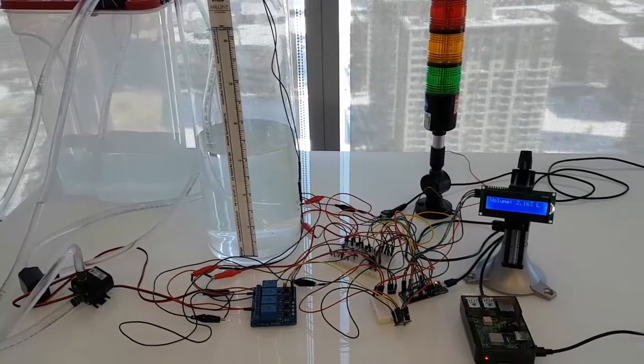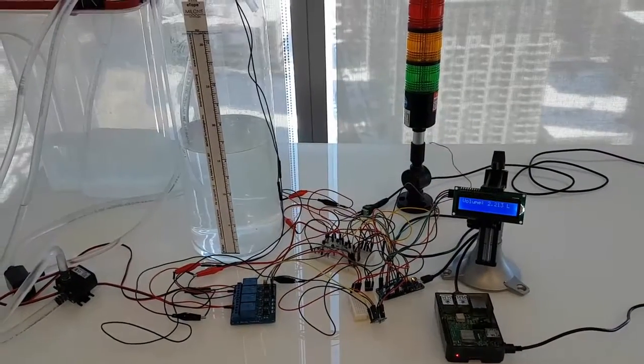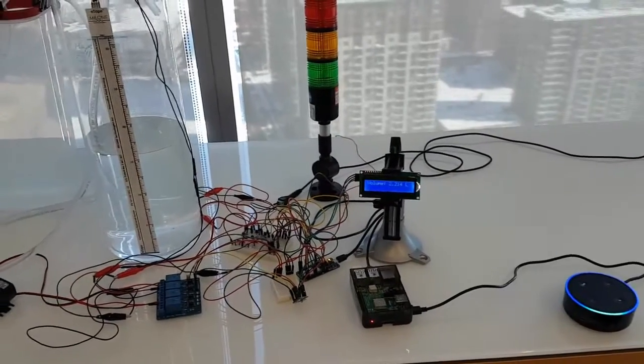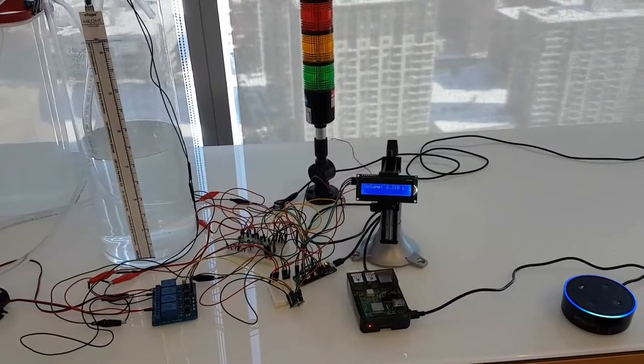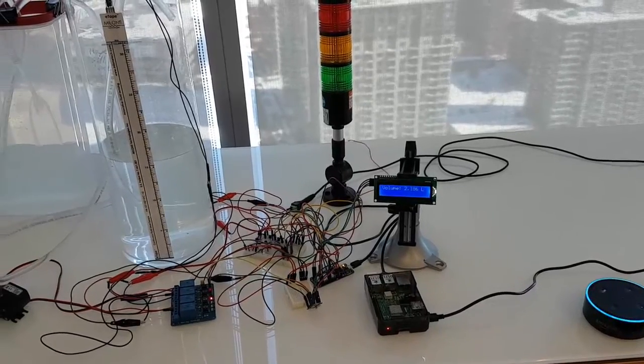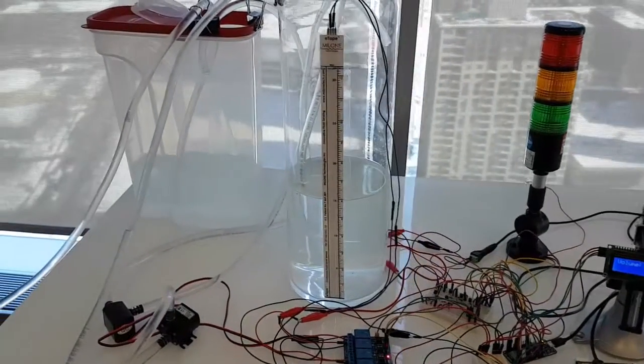Similarly, we can remove liquid by going, Alexa, tell RioControl remove 500. Pumping 500 milliliters of liquid out of the vessel.